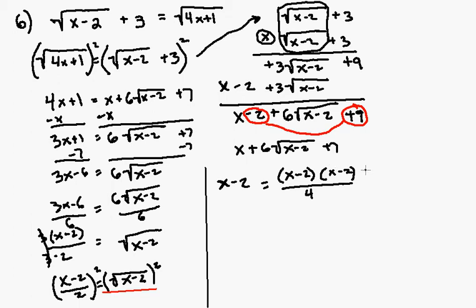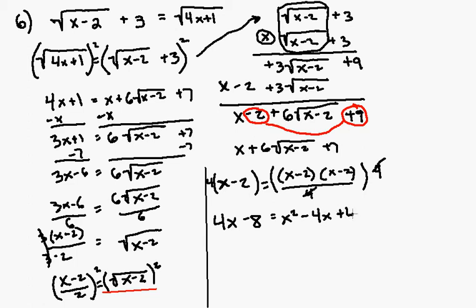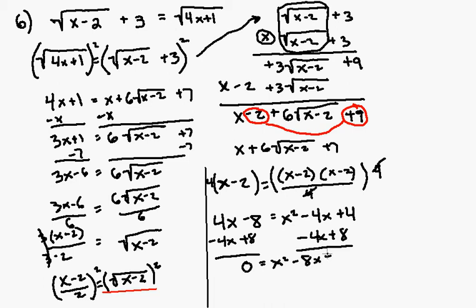Multiplying both sides of the equation by 4, these 4s cancel. On the right I have 4x minus 8. Foiling the left side gives x squared minus 4x plus 4. Moving everything to get the left side equal to zero — subtracting 4x and adding 8 — I have 0 is equal to x squared minus 8x plus 12.